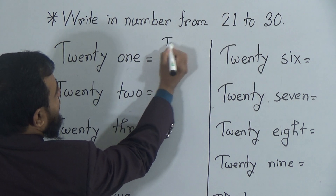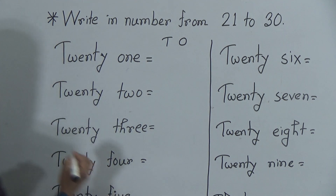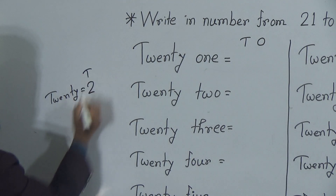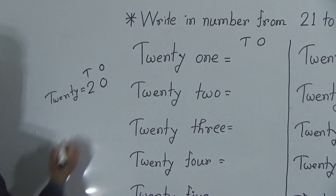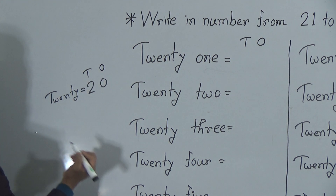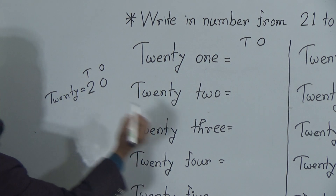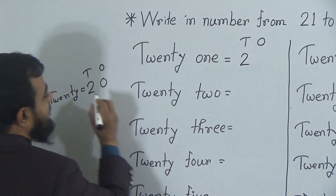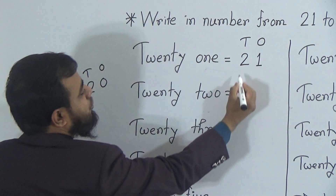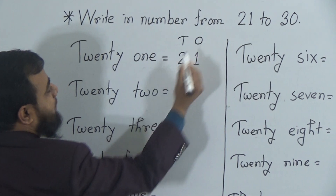To write down twenty-one, we need to know the tens position and the ones position. To make twenty, we write two in the tens position and zero in the ones position — two tens and zero ones makes twenty. The next number after twenty is twenty-one, so two stays in the tens position and the ones position increases by one. Two and one makes twenty-one — two tens and one ones makes the number twenty-one.